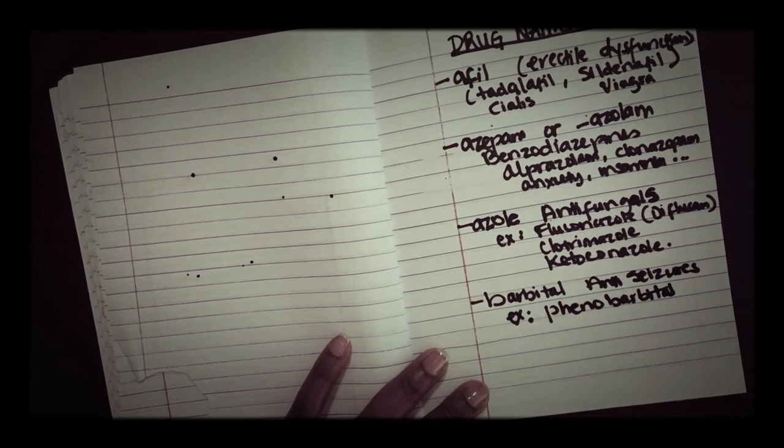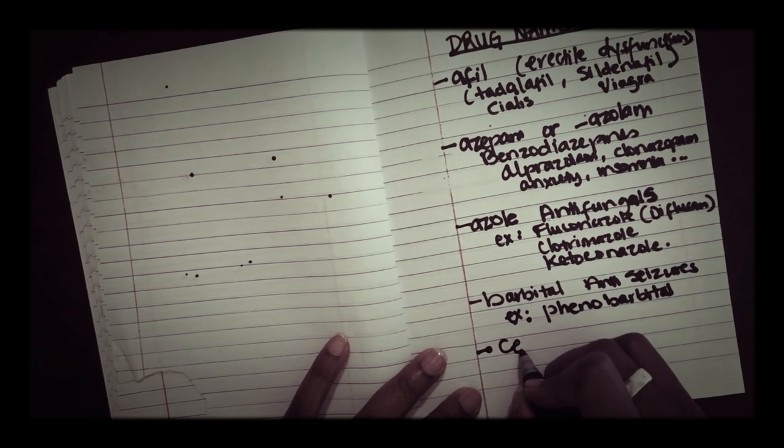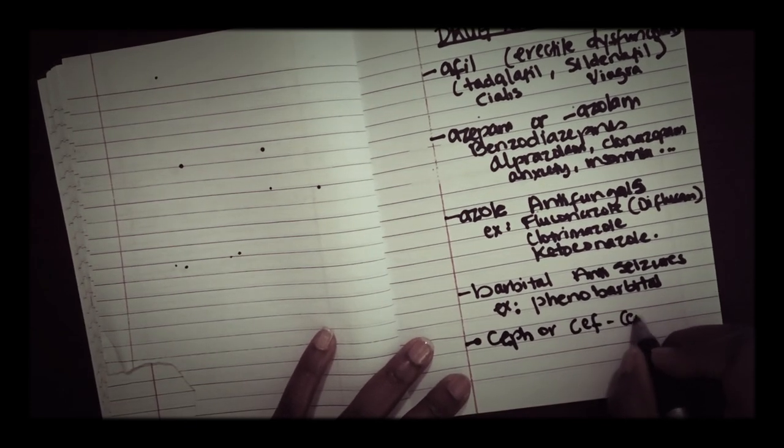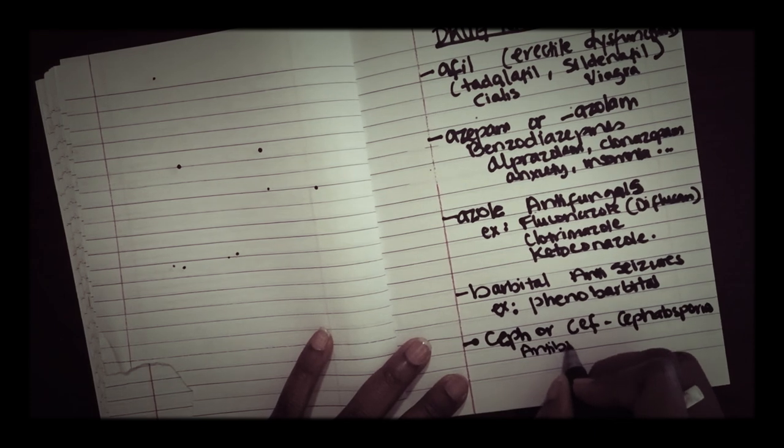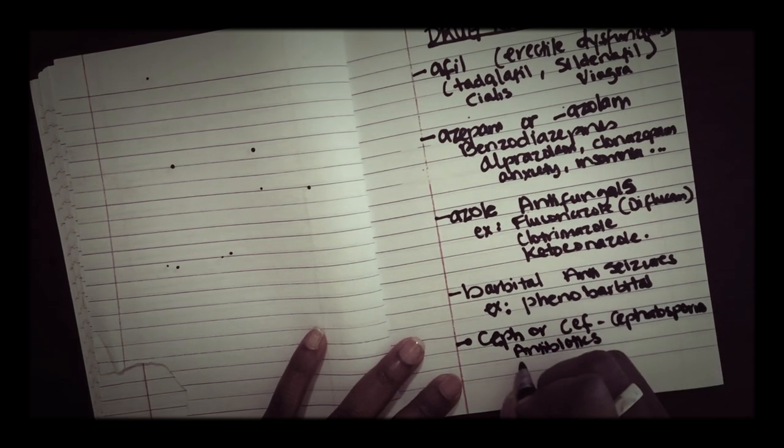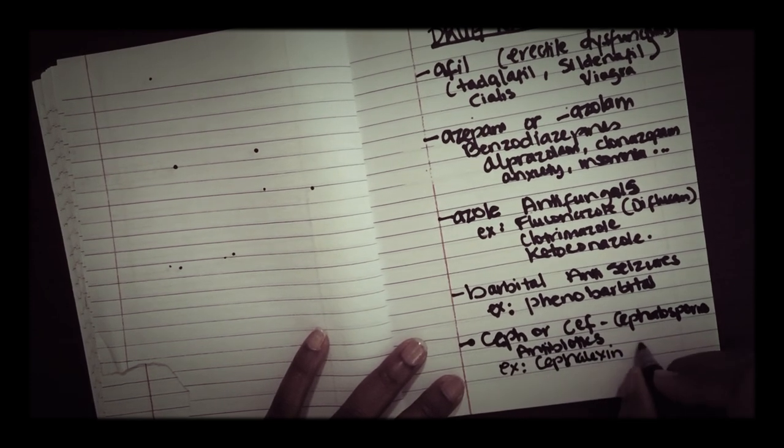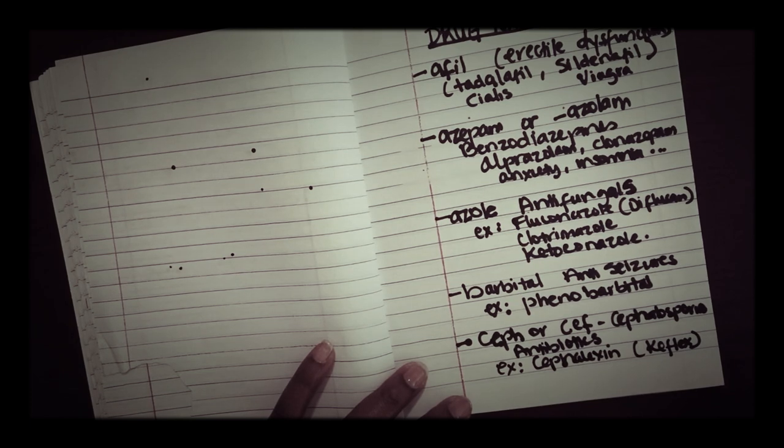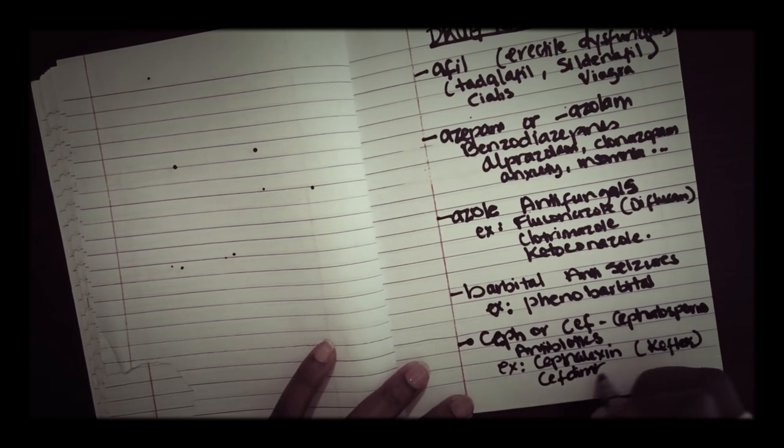Next we have certain antibiotics that start with ceph, C-E-P-H or C-E-F. These are cephalosporin antibiotics. These are used to treat bacterial infections such as, example is your cephalexin brand name Keflex. Another good example is ceftriaxone, we have cefdinir which is Omnicef.